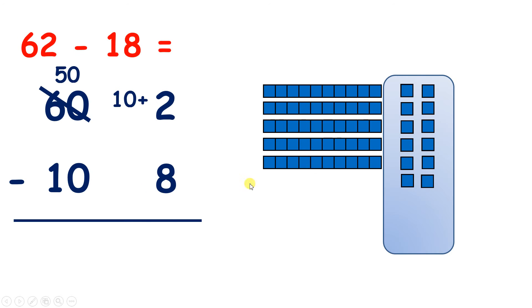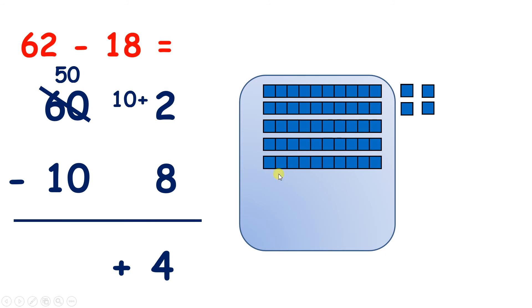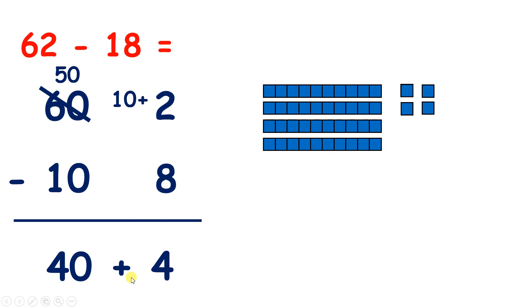Now we can subtract 8 — let's subtract 1, 2, 3, 4, 5, 6, 7, 8 — and that leaves us with 4 units. So now we can move on to our tens. We now have 5 tens, not 6 tens, but 5 tens, or 50, and we need to subtract 10. So if we take away 10, we're left with 4 tens, or 40. Now we have 40 plus 4, which gives us 44.